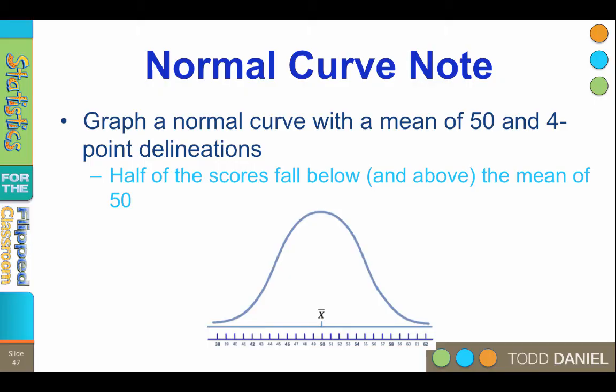One more thing I want to tell you about the normal curve is that it can be overlaid with a number line, and this is where things get really interesting and quite useful. If we have a normal curve, we can add the value of the mean right in the middle where it belongs. In this example, we'll imagine our mean is 50. Half of our scores will always be above the mean, or above 50, and the remaining half will always be below 50. That is what a measure of central tendency tells us — the point at which half of the scores fall above and half fall below.